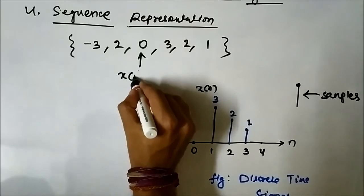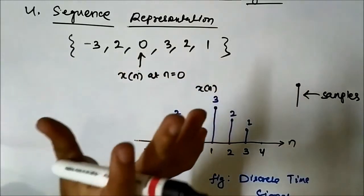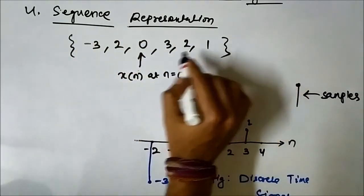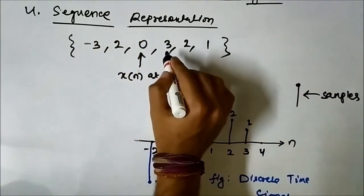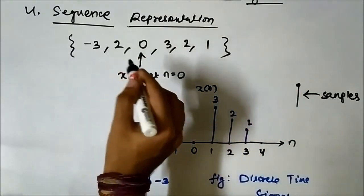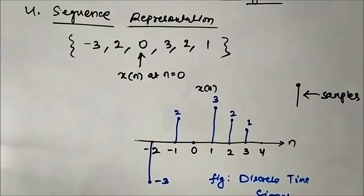So this is how we represent discrete time signals in four possible ways: graphical, functional, tabular, and sequence. I hope you liked this video — please subscribe to my channel Engineering Tutorial for more videos related to electrical, electronics, instrumentation, and communication engineering. Have a great day, thank you very much.